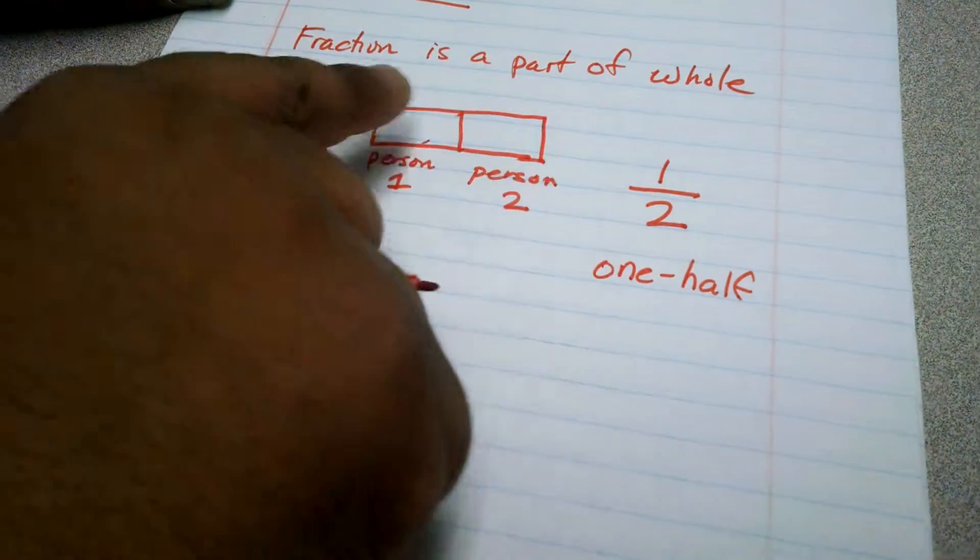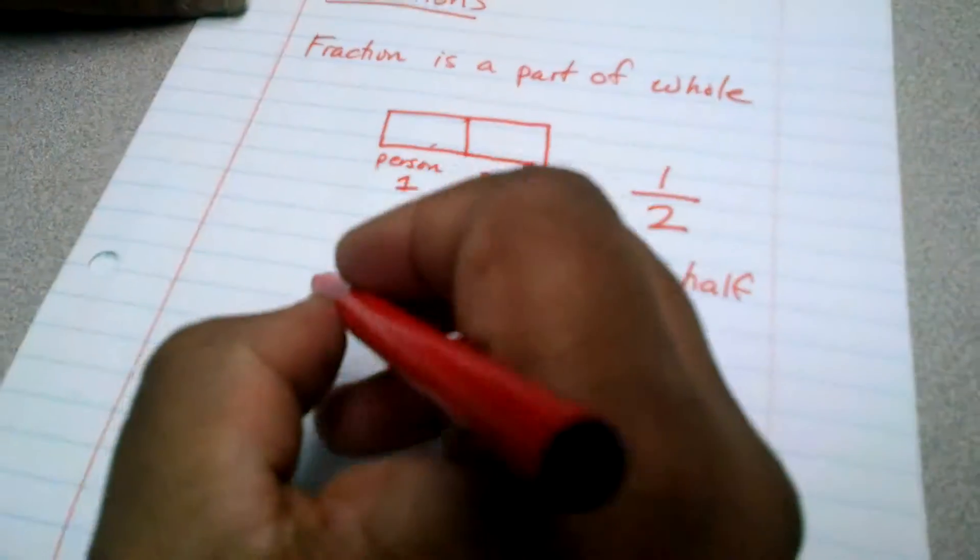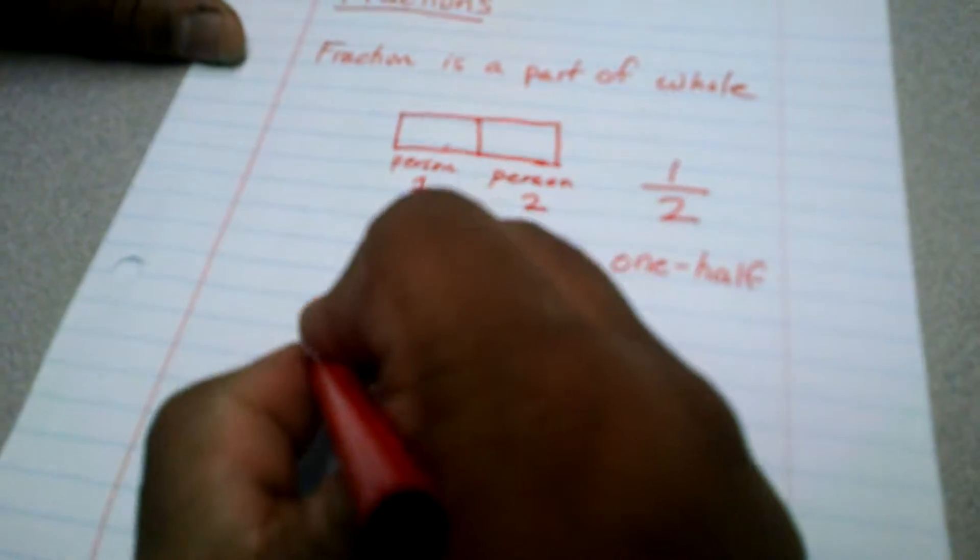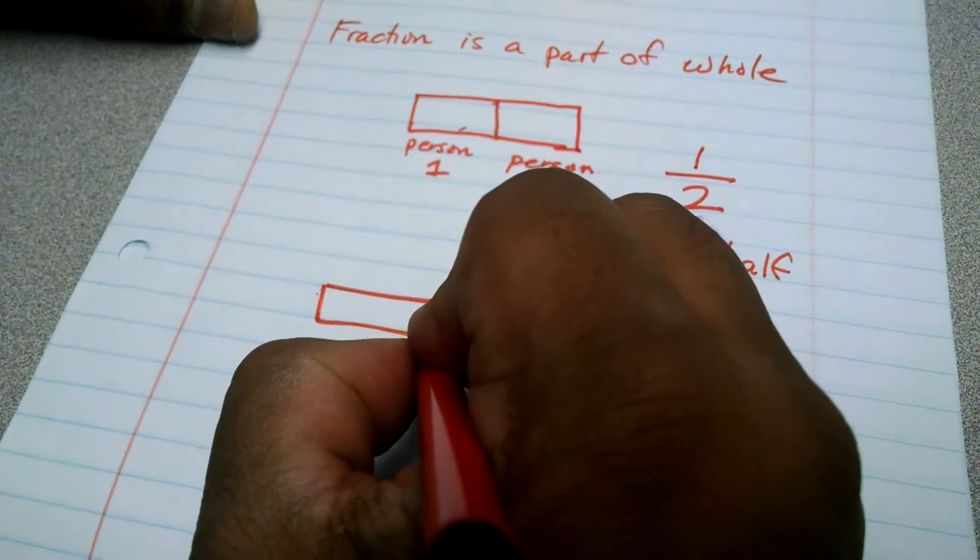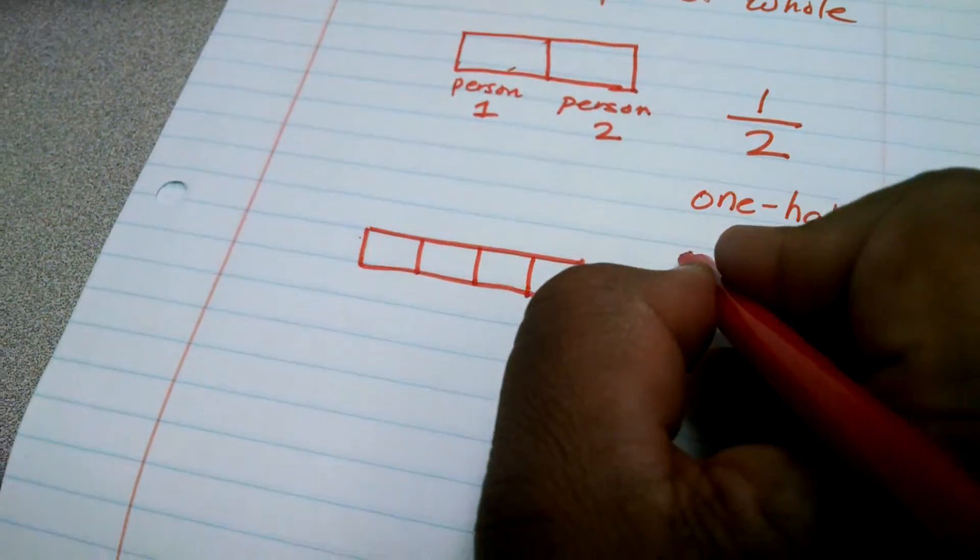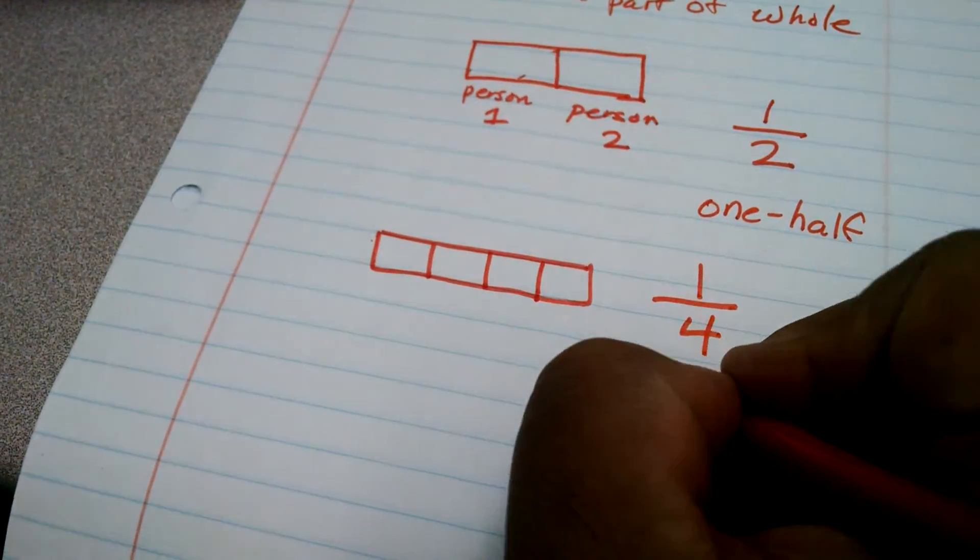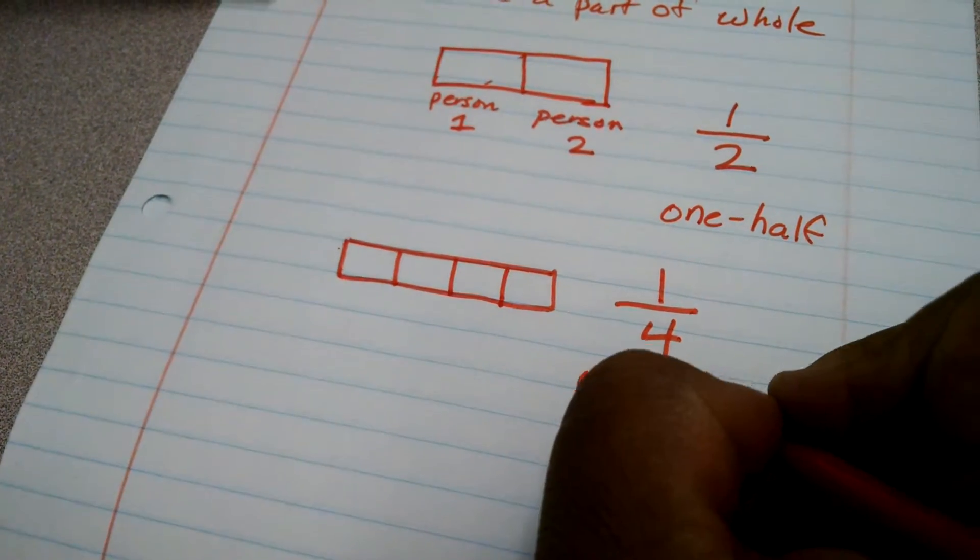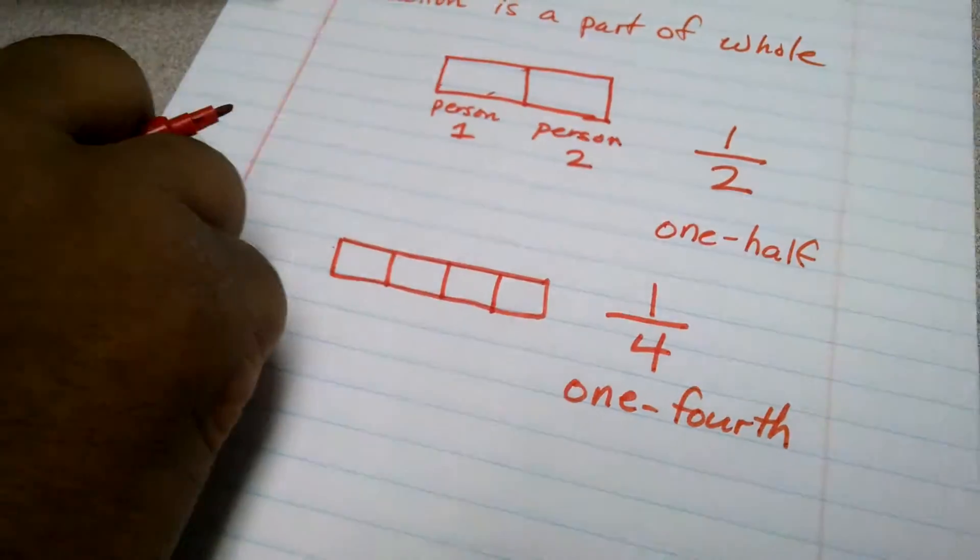goes to one person, one part goes to the other person. If there were four people, I would cut it into four equal pieces, and each person would get one out of four. That's the same as one-fourth. Fractions